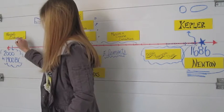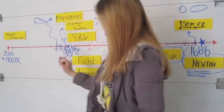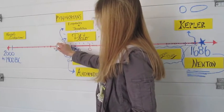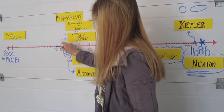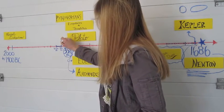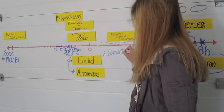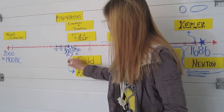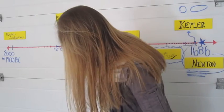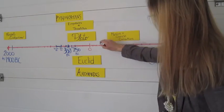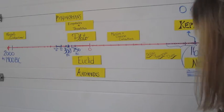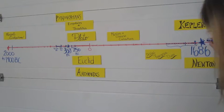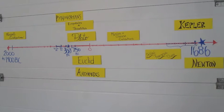What if Plato hadn't drawn on ideas from the Pythagoreans, Empedocles, or Theotetus? What if Euclid hadn't proved Plato's mathematical theories? Where would we be without Archimedes, Muslim, and Chinese mathematicians? Perhaps Renaissance mathematicians would not exist. Maybe elliptical planetary orbit and the laws of gravity wouldn't have been discovered.